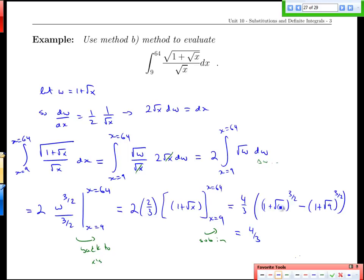So we'll have 4 thirds. Square root of 64 is 8, so this whole thing in here is 9. Square root of 9 is 3, so we'll have 1 plus 3, that's 4, and then we do the root and then the third power. Square root is 3, cubed is 27. Square root of 4 is 2, cube that and we get 8. And at the end of the day that's going to give us 4 thirds times 19, and that is 76 thirds as our final value.